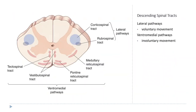Even though the decisions about what parts of the body to move and how come from the brain, the commands ultimately go out to the muscles from the spinal cord, so there has to be a connection from the brain to the spinal cord. Those connections we call the descending spinal tract. When we say descending, we mean going from the brain to the spinal cord. Ascending would be going from the spinal cord to the brain — it doesn't necessarily mean going down.